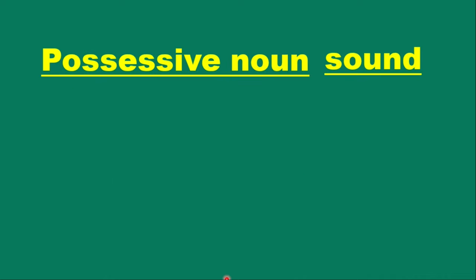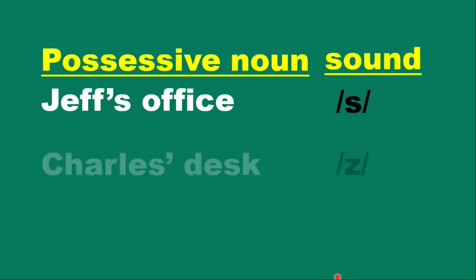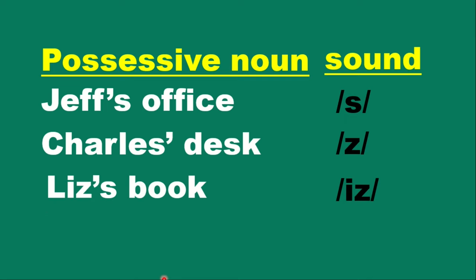Regarding possessive nouns and sound, there is something to consider when pronouncing them. For example, Jeff's — you hear the s sound: Jeff's. Charles' desk — you hear the z sound: Charles'. Lizzie's book — the sound is 'iz': Lizzie's.